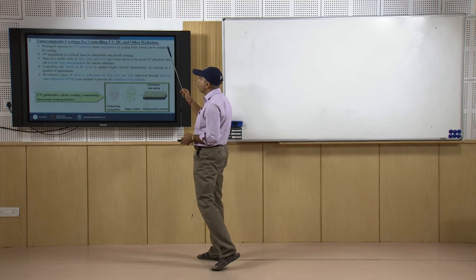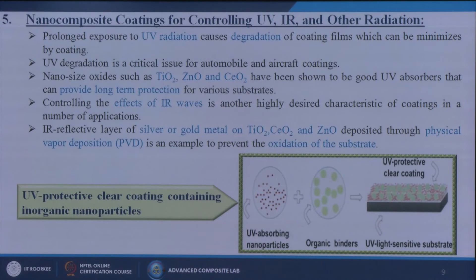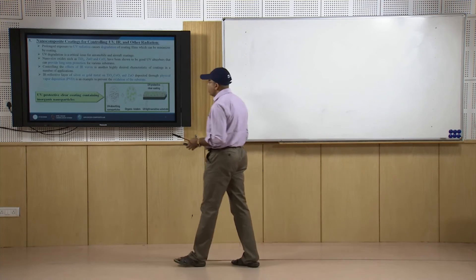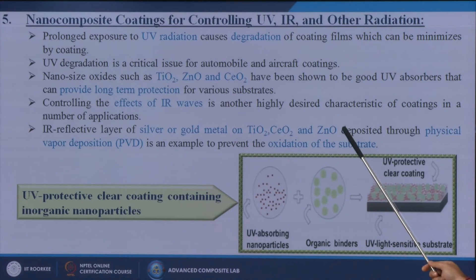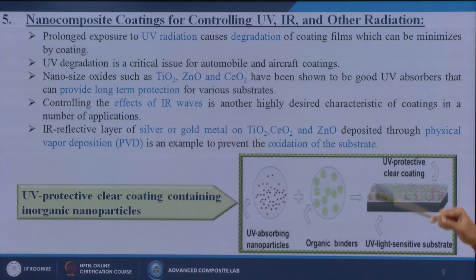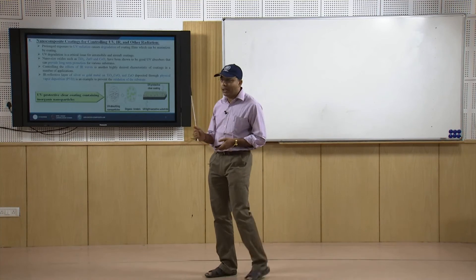Next we discuss nanocomposite coatings for controlling UV, IR, and other radiations — protecting materials from ultraviolet, infrared, and other radiation. Prolonged exposure to UV radiation causes degradation of coating films, which can be minimized by coating. UV degradation is a critical issue for automobile and aircraft coatings. Nano-size oxides such as titanium dioxide, zinc oxide, and cerium oxide have been shown to be good UV absorbers providing long-term protection. Controlling IR waves is another highly desired characteristic; IR-reflective layers of silver or gold metal on TiO2, CeO2, and zinc oxide deposited through physical vapor deposition can prevent oxidation of the substrate.